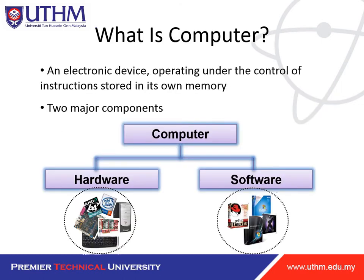So what is a computer? A computer is an electronic device operating under the control of instructions stored in its own memory. There are two major components: hardware and software.